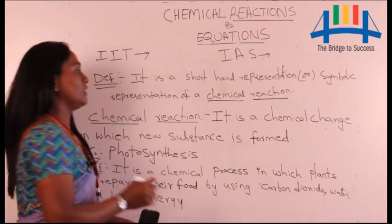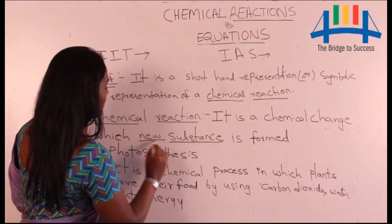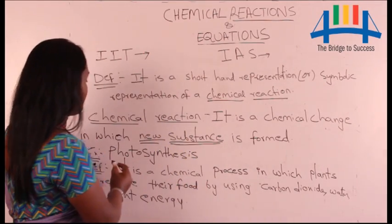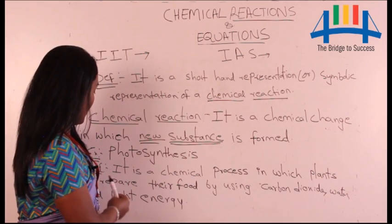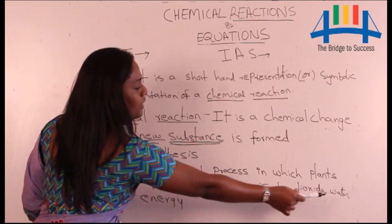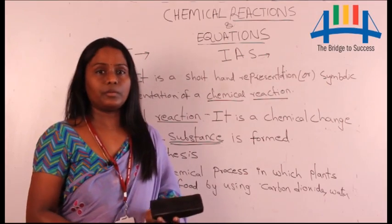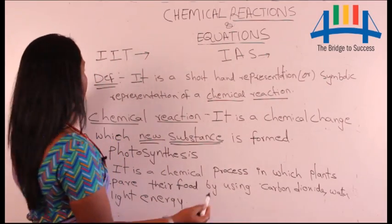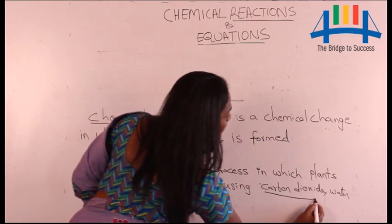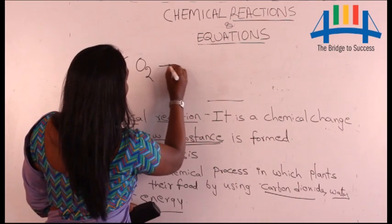Now what is exactly meant by chemical reaction? A chemical reaction is a chemical change in which a new substance is produced. Let us take the example of photosynthesis — it is a chemical process in which plants prepare their food by using carbon dioxide, water, and light energy. Instead of explaining all these things in words, I am now writing it in short form.